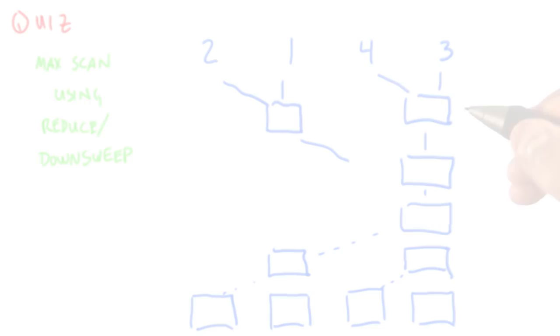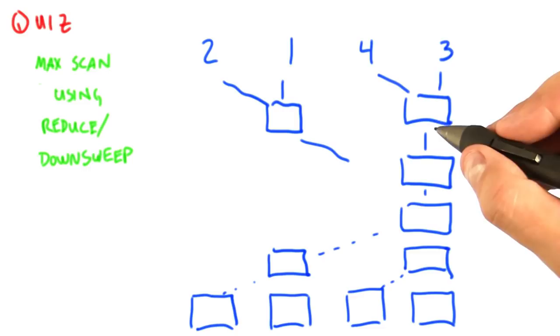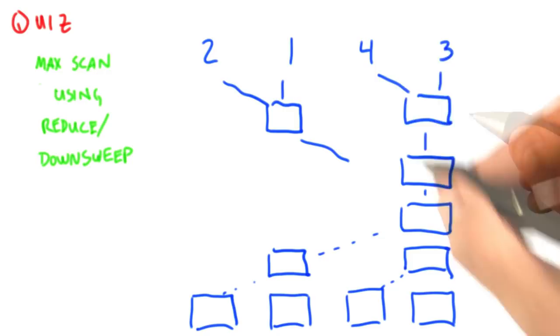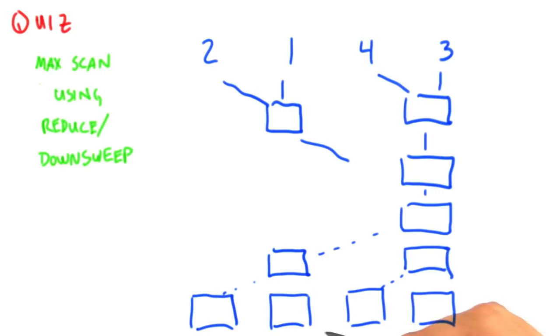As a quiz, I'd like you to compute the max scan of this input sequence 2, 1, 4, 3 using this reduce down sweep method. So you're going to fill in these values from the reduction and then fill in each of these values from the down sweep. And when you finish, you should have the max scan, the max exclusive scan, of these elements given this input. So give it a shot.